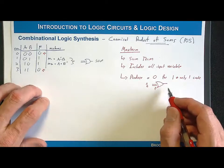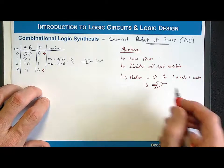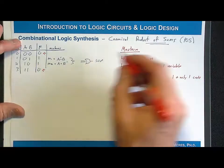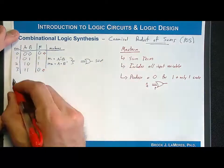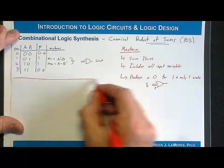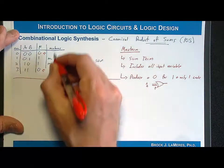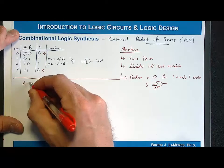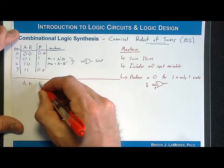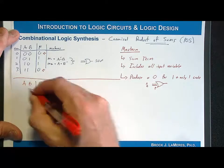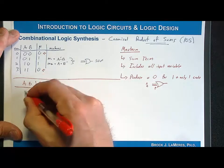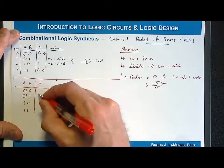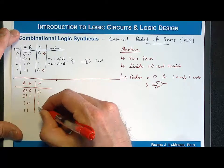Let's redraw our truth table so we can put in the max-term this time. I'm going to have A, B, and F. The rows will be: 0,0,0 — 0,1,1 — 1,0,1 — 1,1,0.